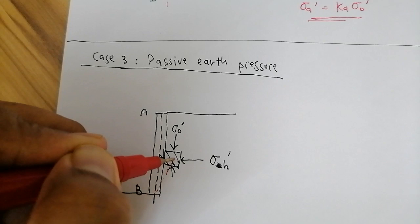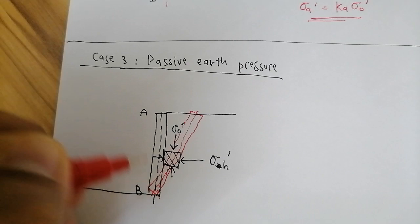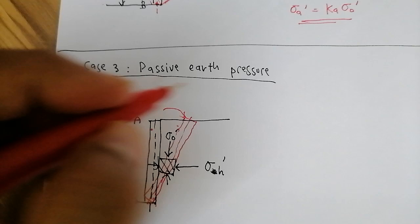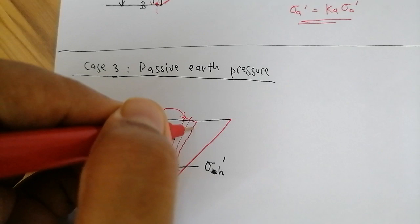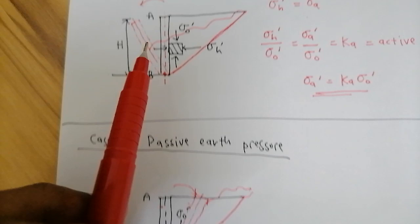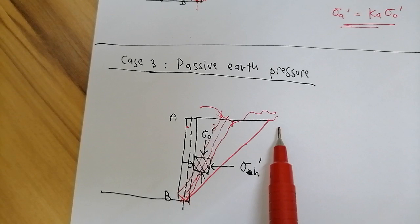The wall rotates and moves into the soil, pushing the soil inwards. This is the new position of the wall. The triangular soil mass will now feel sliding upwards along this plane — the opposite of the active case, where it felt sliding downwards.